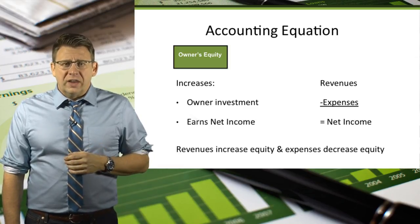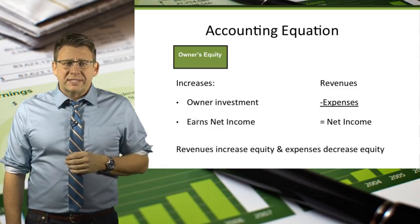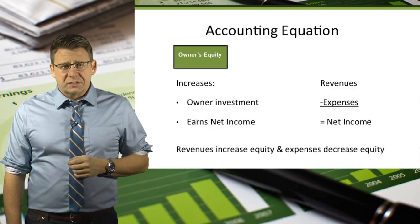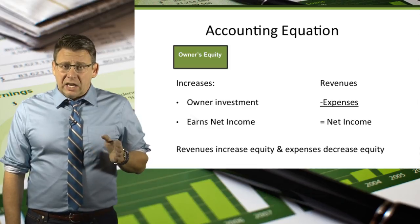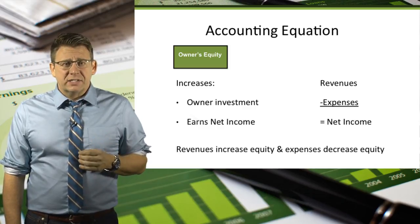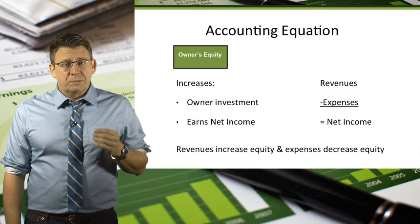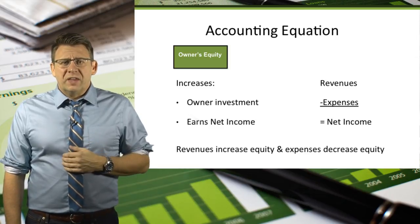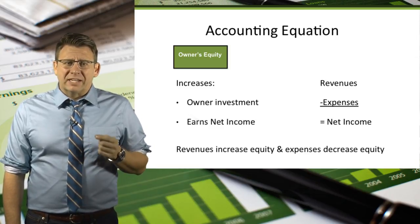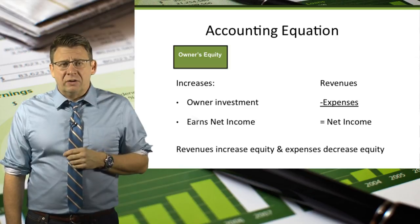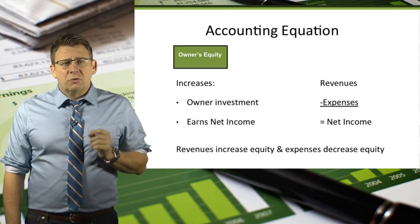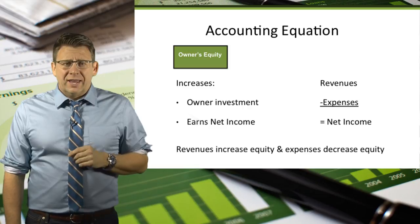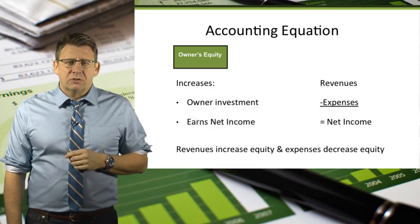Net income is revenues minus expenses when revenues are greater than expenses. Net loss is revenues minus expenses when expenses are greater than revenues. So another way to think about the impact of net income or loss on the accounting equation is that revenues increase owner's equity and expenses decrease owner's equity.